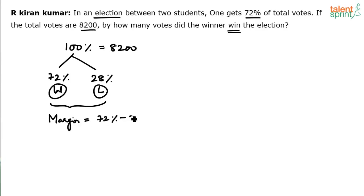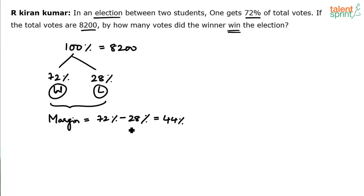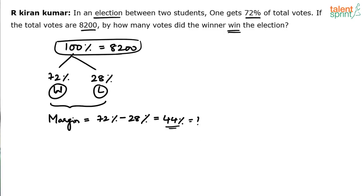So, 72% minus 28% gives us the margin. 72 minus 28 equals 44%. So 44% will be the correct percentage to calculate. The equivalent of 44% of total votes is going to be the right answer. By how many votes did he win? 72 minus 28 — 72 minus 30 is 42, plus 2 is 44. So 44% of 8,200 is what we need to find.